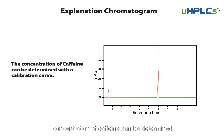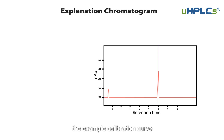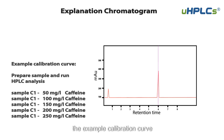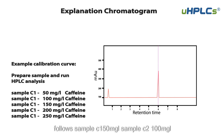The concentration of caffeine can be determined with a calibration curve. Let's check the example calibration curve. Prepare samples and run HPLC analysis as follows.